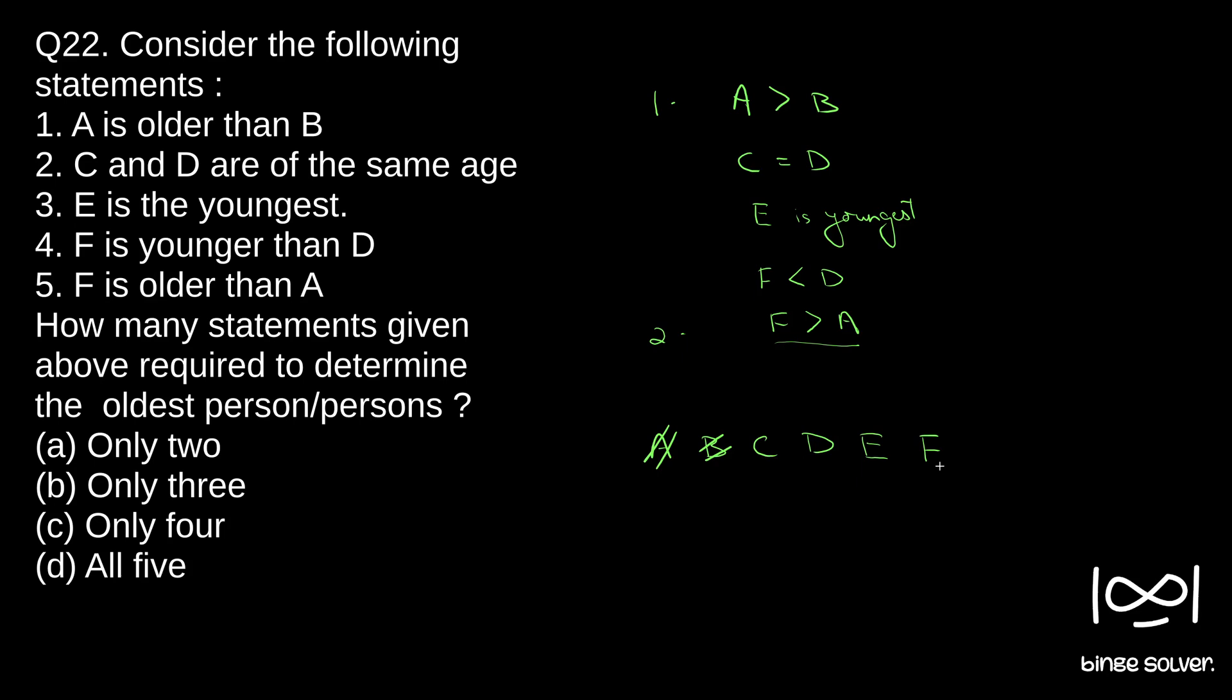Any of these people can be old. If you see, only one statement has E in it. We can use that to make sure that E is not the oldest. It is given E is youngest, so E is also not oldest.